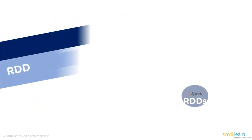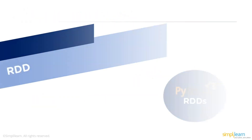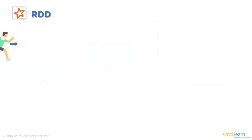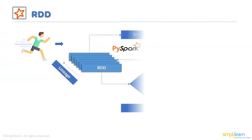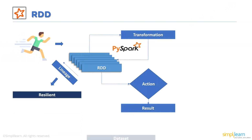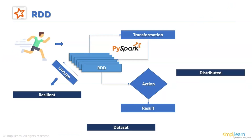Let's learn more about RDD. RDD stands for Resilient Distributed Dataset. It is Apache Spark's primary data structure. RDD in Apache Spark is an immutable group of objects that computes on several cluster nodes. With the use of RDD Lineage Graph, the system is resilient or fault tolerant, and is therefore able to recompute missing or damaged partitions as a result of node failure.